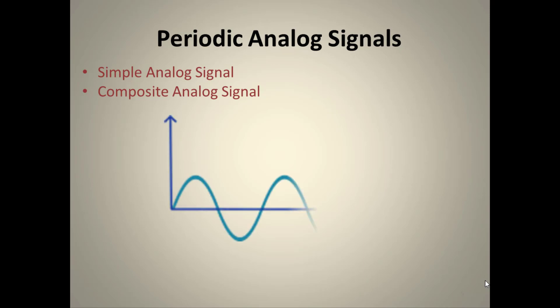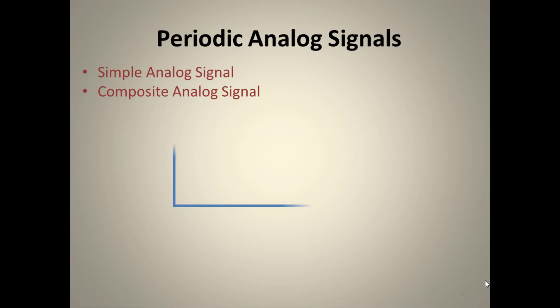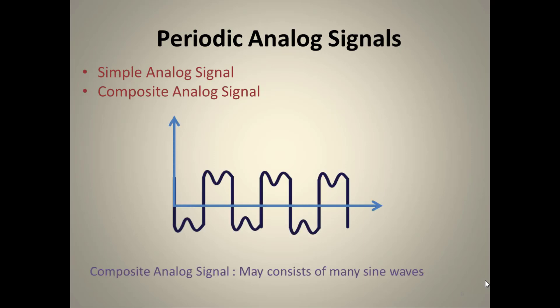A periodic analog signal can be of two types: a simple analog signal and a composite analog signal. A simple sine wave is an example of a simple analog signal. A composite analog signal is constructed by combining many sine wave components.